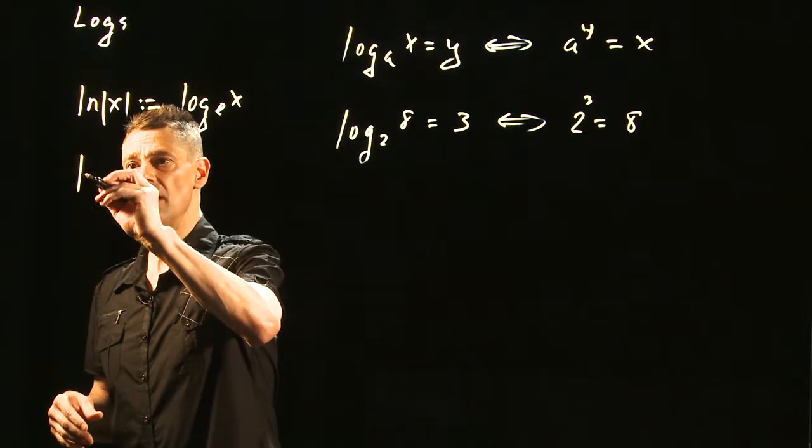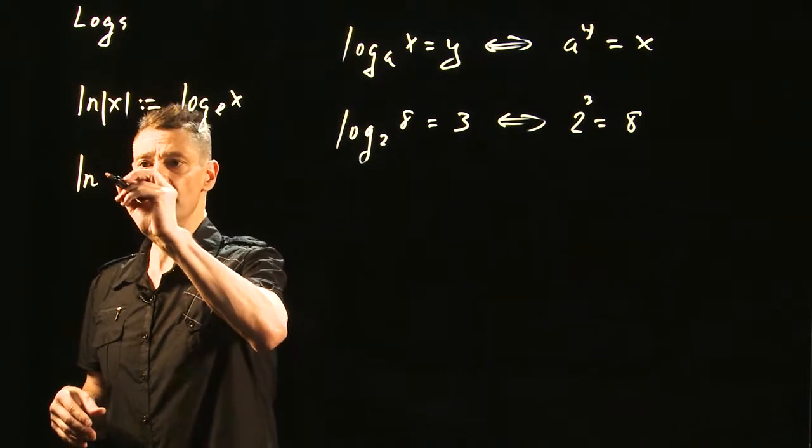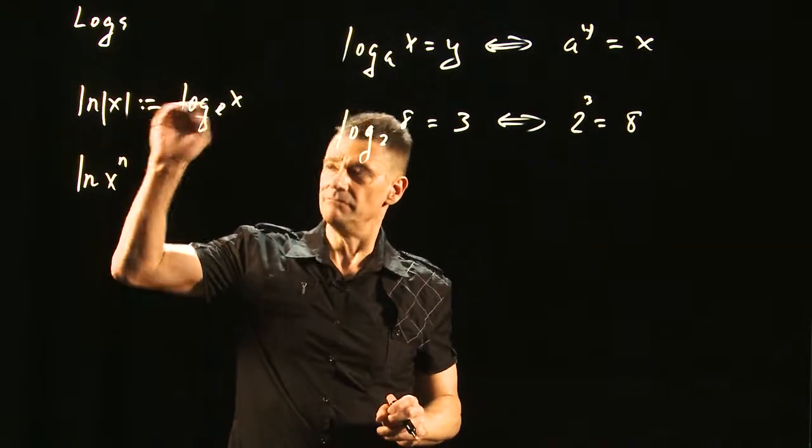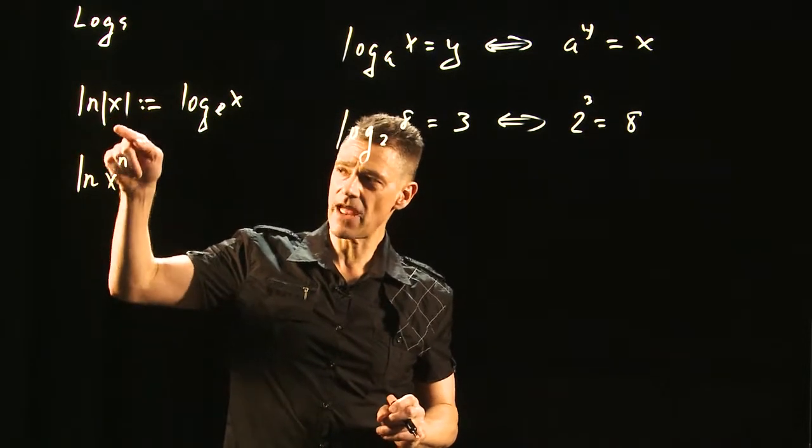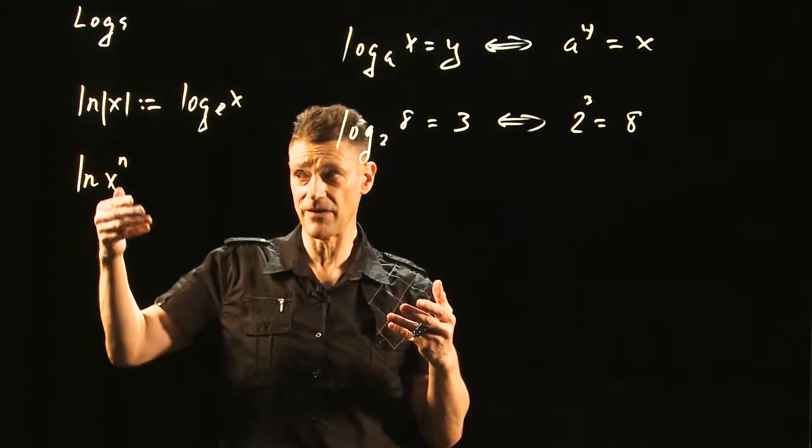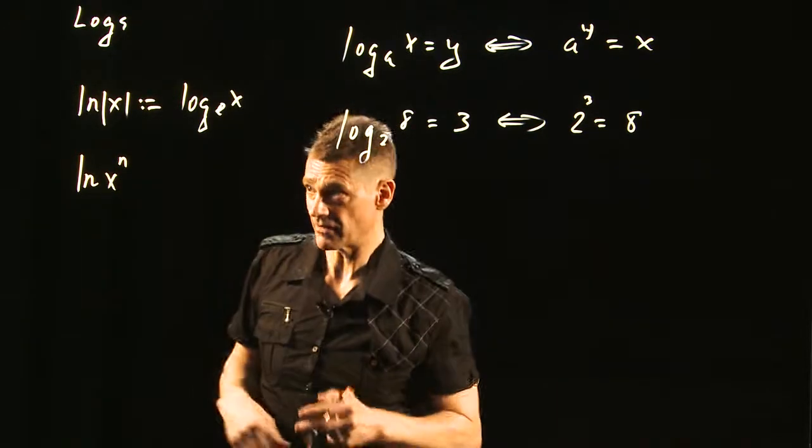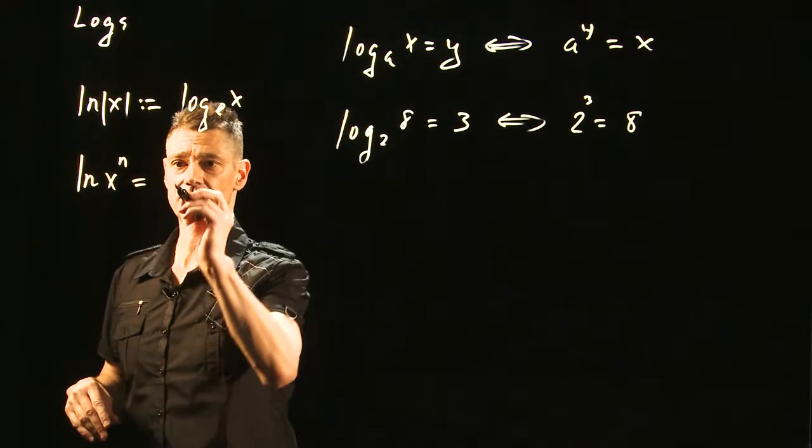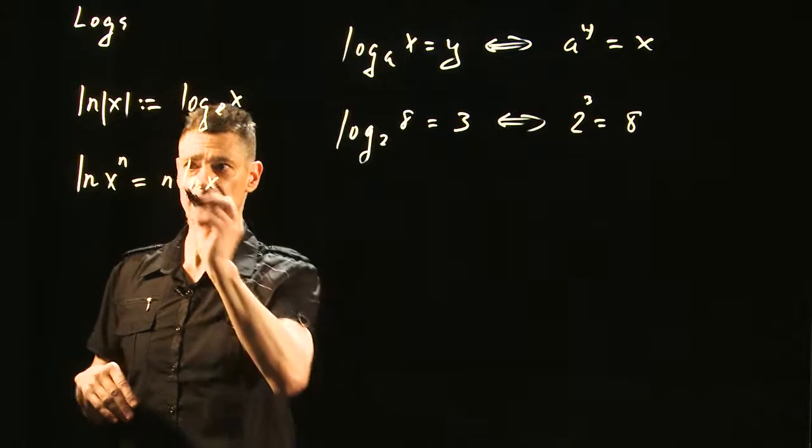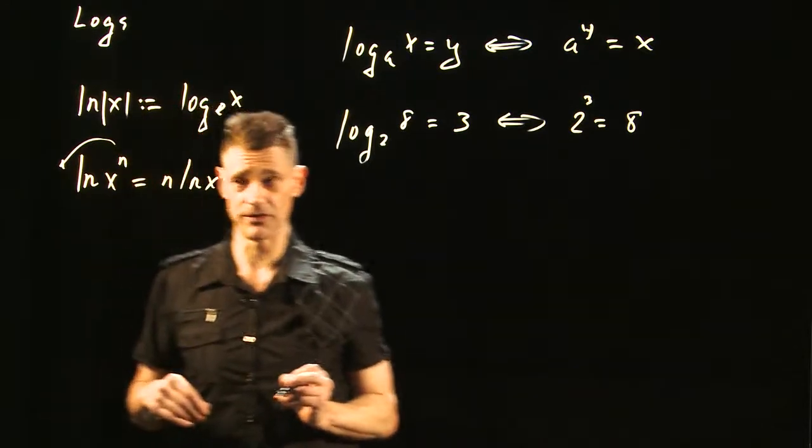Some rules about logarithms. The natural log of x to the n, and incidentally, because you don't want to necessarily draw the absolute value bars on there all the time, you just kind of keep in the back of your head that x must be positive. This is equal to n log x. So these come down, which is a really important thing.